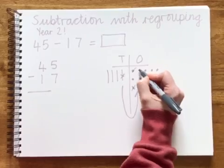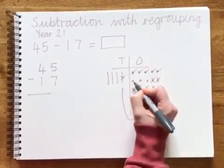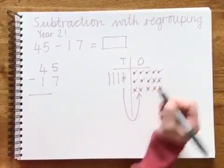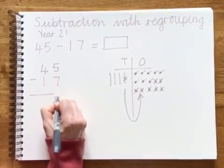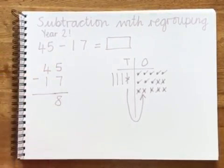1, 2, 3, 4, 5, 6, 7, 8. I will put 8 in my column addition underneath the 5 and the 7.